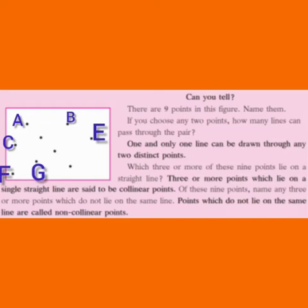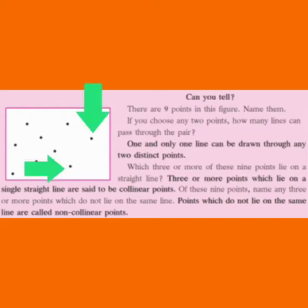If you choose any two points, how many lines can pass through the pair? One and only one line can be drawn through any two distinct points.